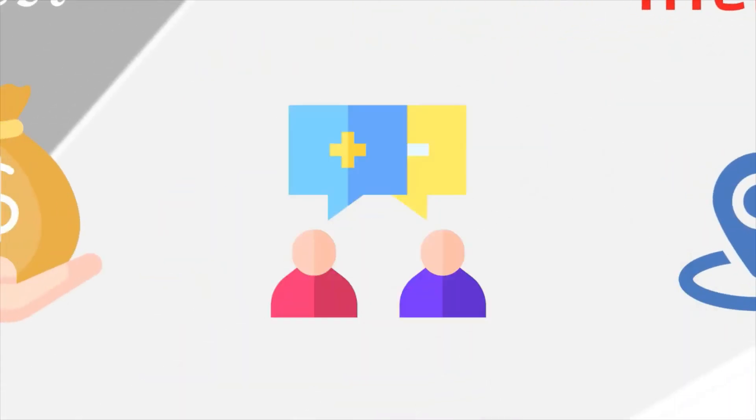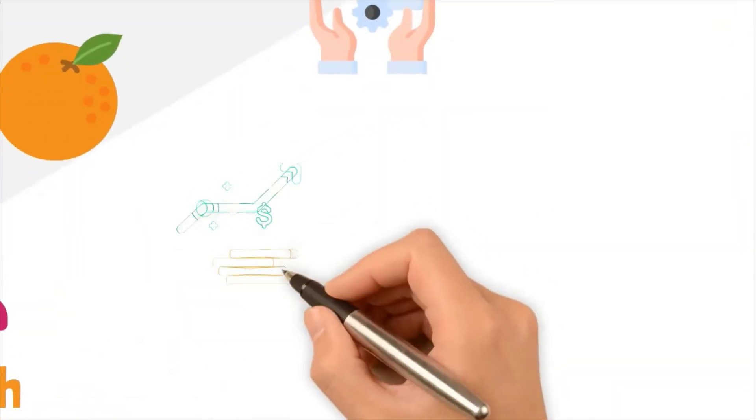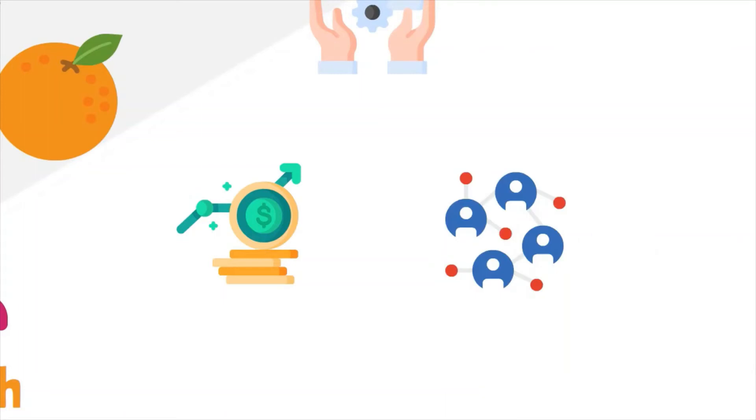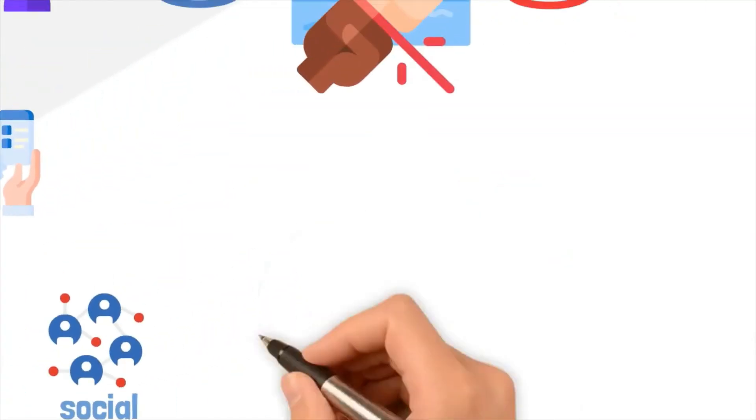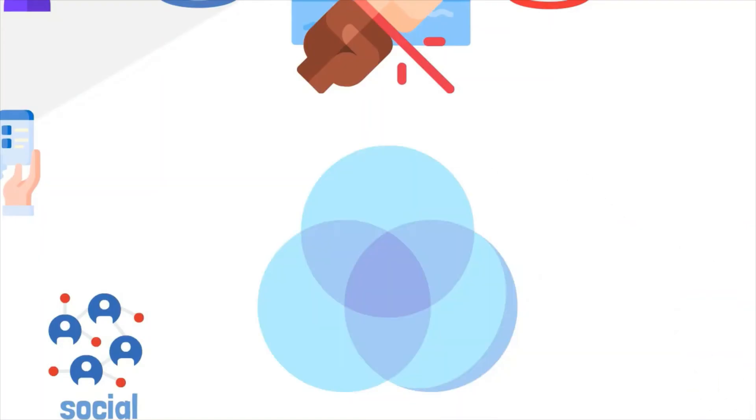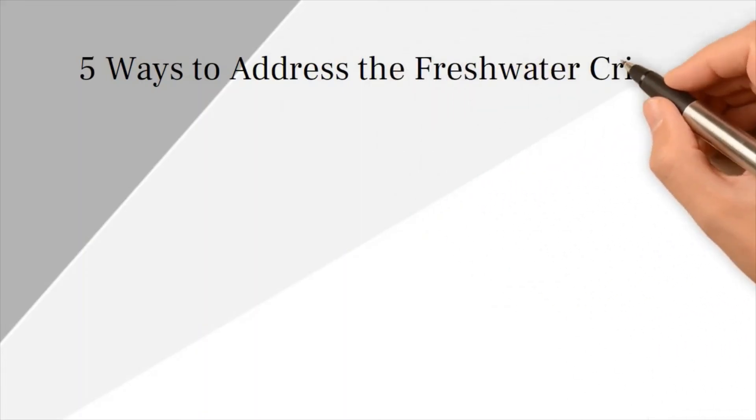Addressing water scarcity requires a multidisciplinary approach. Water resources must be managed with the goal of equitably maximizing economic and social welfare without compromising ecosystem functioning. This ideal is sometimes referred to as the triple bottom line: economics, environment, and equity. At the end of the video, we are going to present five ways to address the freshwater crisis.